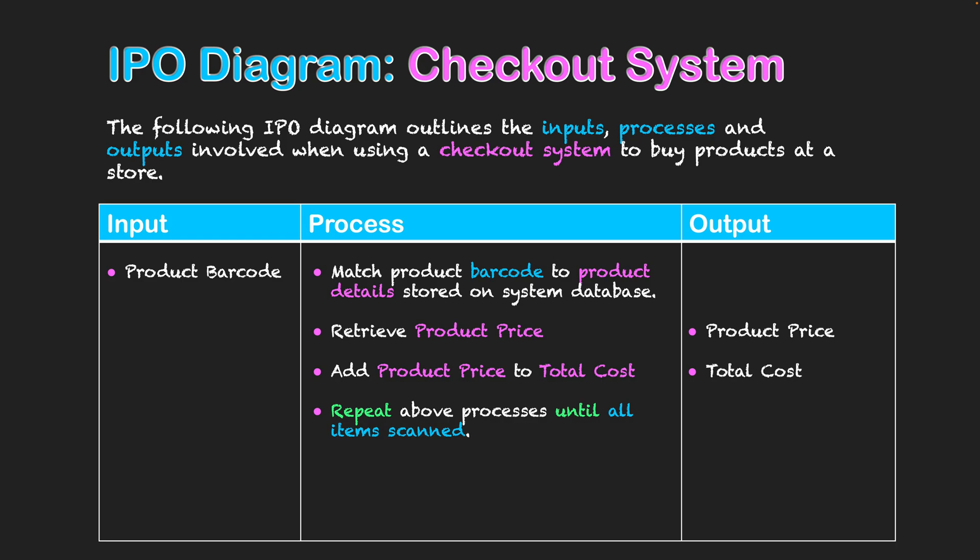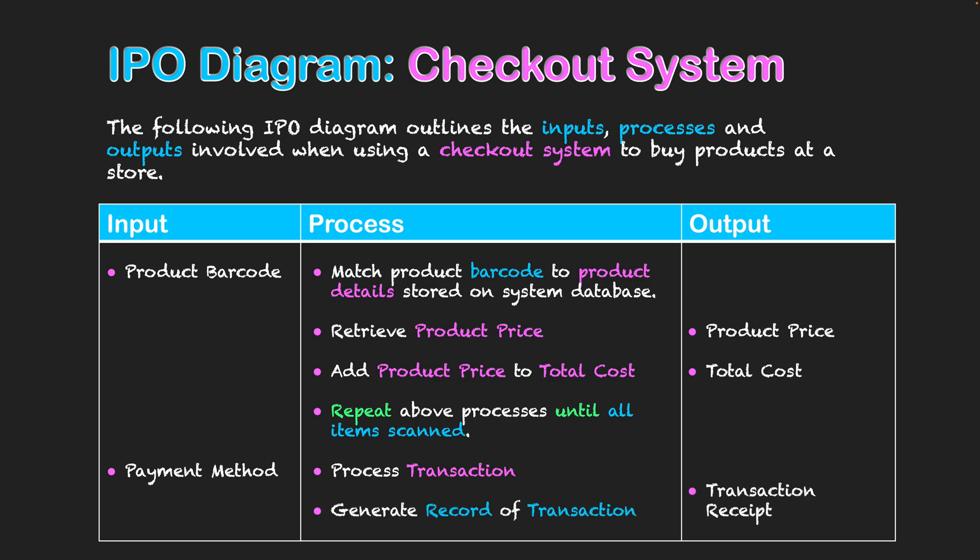Those three steps above will be repeated, illustrating that the total cost will keep increasing with every product scanned. Once all products are scanned, the total cost will be finalized. It's then time to pay — so the customer selects a payment method, either card or cash, and the process associated with that will be the processing of the transaction.